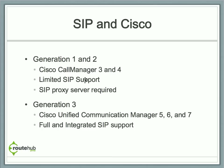With generation 1 and 2 of the Cisco Call Manager product line — versions 3 and 4 — there was very limited SIP support. A SIP phone required a SIP proxy server, with a SIP trunk connecting to the Call Manager, adding significant complexity. Starting with generation 3 and higher — Cisco Unified Communication Manager versions 5, 6, and 7 — it provided full integrated SIP support for SIP endpoints and for integration with systems like Microsoft Exchange 2007 for unified messaging.